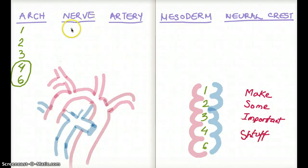First, let me write down the cranial nerves associated with these brachial arches. So brachial arch 1 is going to give rise to cranial nerve 5. 2 is going to give rise to 7. 3 is going to give rise to 9. And 4 and 6 is going to give rise to 10. Both of them is going to be 10.